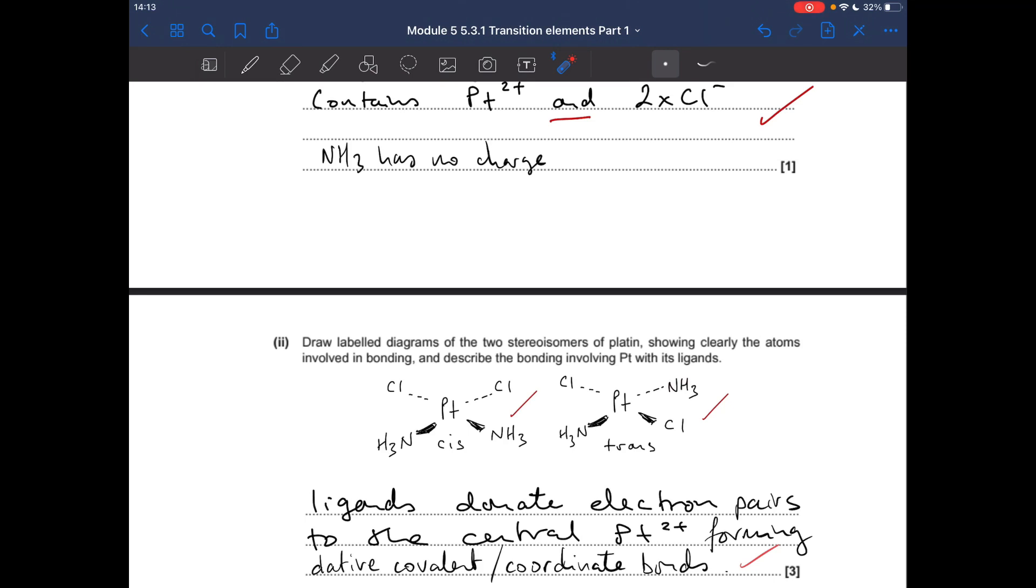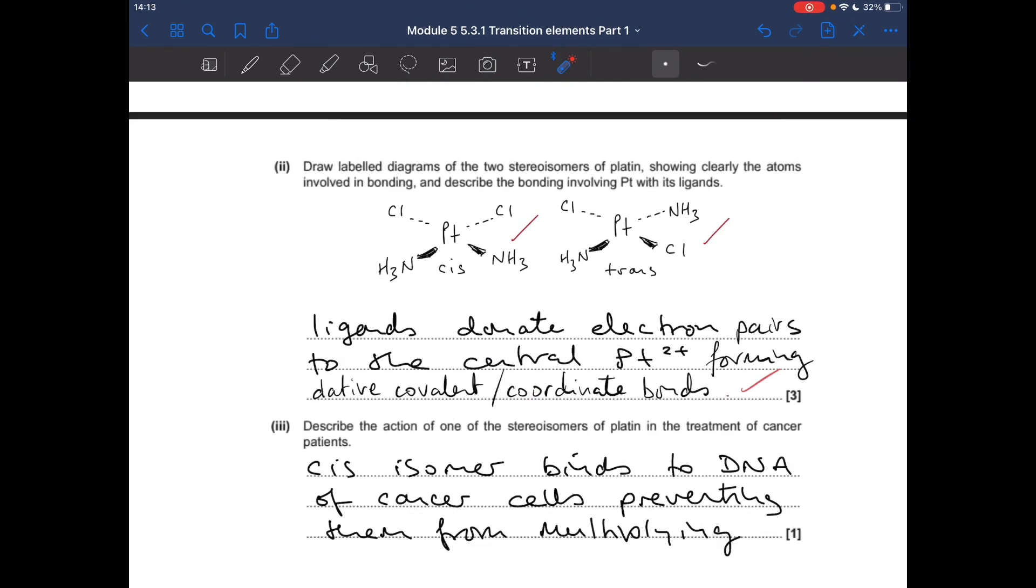The bonding: ligands donate electron pairs to the central Pt2 plus ion forming dative covalent or coordinate bonds. And finally, part C, it's the cis isomer that binds to DNA of cancer cells, and that prevents them from multiplying.